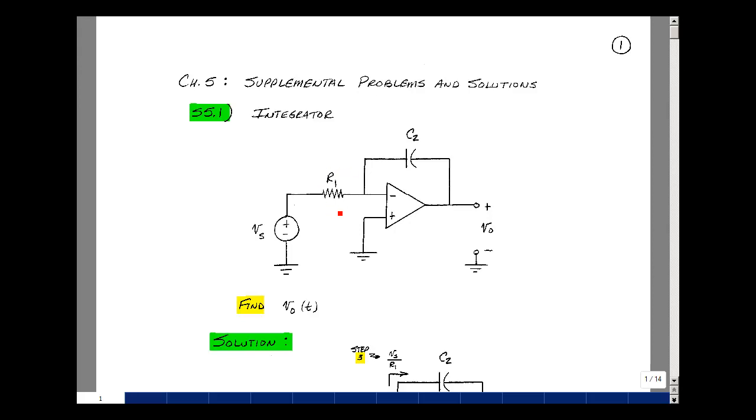Given this op-amp circuit with a resistor and a capacitor and a voltage source V sub s, which is a function of time, can you solve for V out as a function of time?